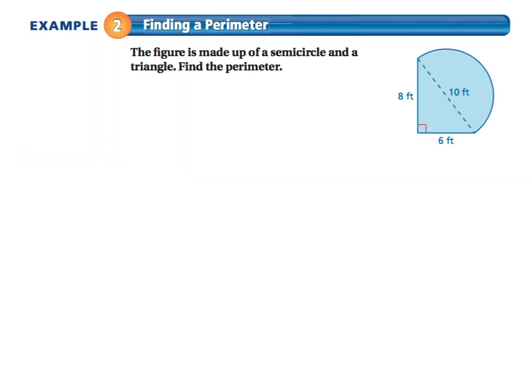So in example 2, we're going to find the perimeter. The figure is made up of a semicircle and a triangle. Find the perimeter. Well, the triangle part is really easy. So we just have 14 there. 14 feet. I don't know what that is, but that is not 14 feet. So 14 feet.